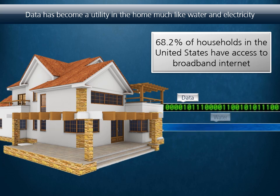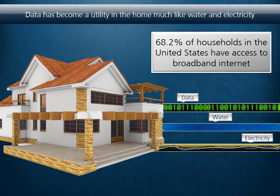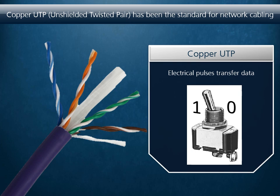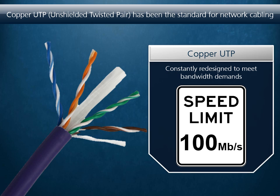The internet is ingrained into our lifestyles. With 68.2% of American households having access to broadband internet, data is now a utility, just like water or electricity. And the demand for ultra-fast data transfer is growing. For years, copper UTP, or unshielded twisted pair, has been the standard for network cabling, carrying the ones and zeros of digital data as switching electrical pulses — one is on, and zero is off.